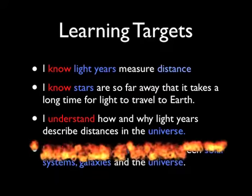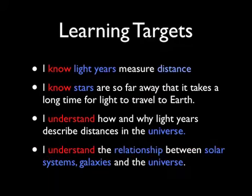The fourth learning target is that you understand the relationship between solar systems, galaxies, and the universe — how they interact with each other, which is the largest, which is the smallest, and whether they build on each other. So what do solar systems, galaxies, and universe all mean to each other?